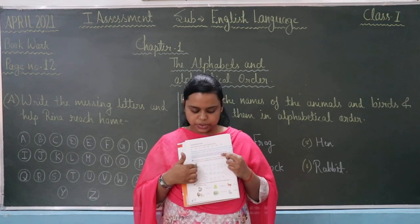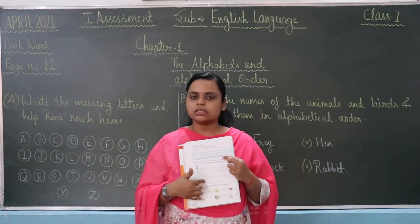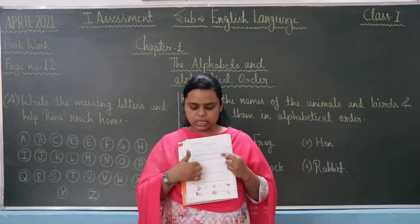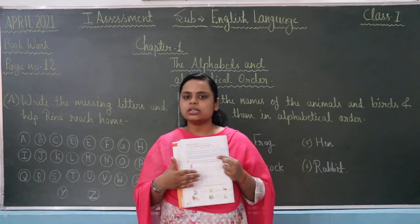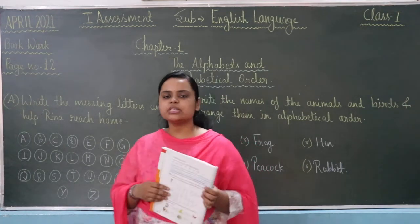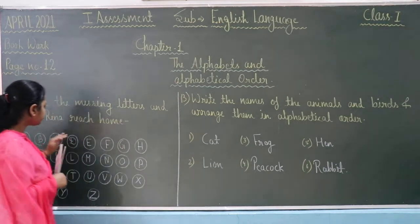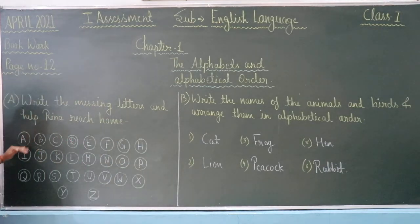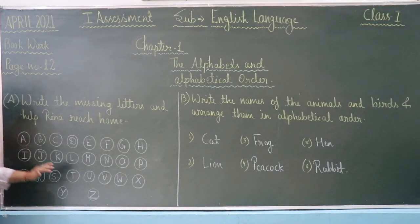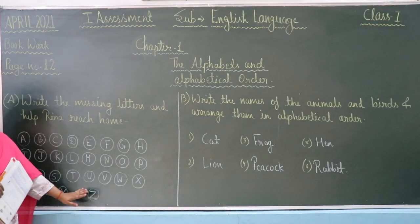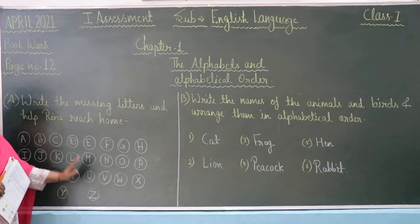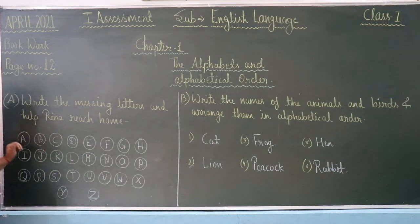You have to help Reena reach her house. The blank circle represents the alphabets. Alphabet is from A to Z — 26 letters. That is your alphabet.